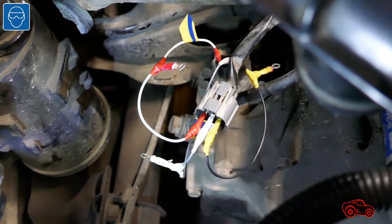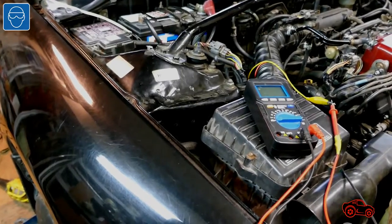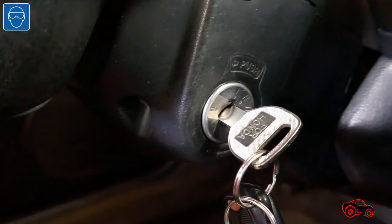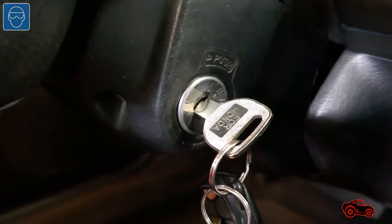To do the first test, I connected the sensor with the jumper wires. Then I connected the probes of the multimeter. Next, I turned the ignition key to the on position and I put the transmission into neutral to be able to slowly spin the wheel by hand.